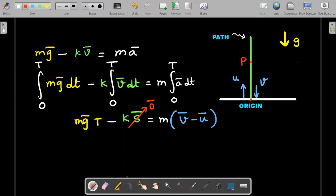Which makes it mg bar T. This term and this term would be equal to each other. I think I can cancel m off on both sides. So it would be simply g bar T is equal to v bar minus u bar. Still a vector equation.